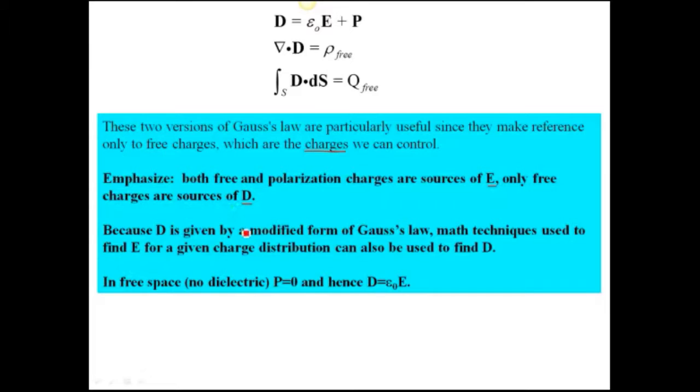Because D is given by a modified form of Gauss's law, we can use a lot of the mathematical techniques we use to find E. For a given charge distribution, we can also find D. In free space, where there is no dielectric, the polarization is equal to zero. And therefore, D is equal to epsilon zero times E. So one more time: in free space, P is equal to zero, so we're left only with one term for D. And you just simply multiply by epsilon zero to get D.